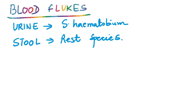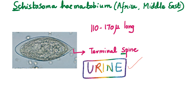One species, Schistosoma haematobium, has adult worms in the vesical plexus, so the eggs are demonstrable in the urine. Schistosoma haematobium is primarily reported from Africa and the Middle East. In exam questions, there will typically be a mention that the patient has traveled to Africa or the Middle East. In the urine you see non-operculated, elongated, ellipsoidal eggs, 110 to 170 microns long, with a terminal spine — this is Schistosoma haematobium.